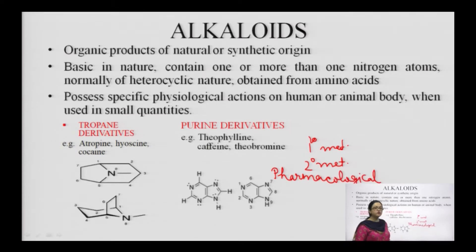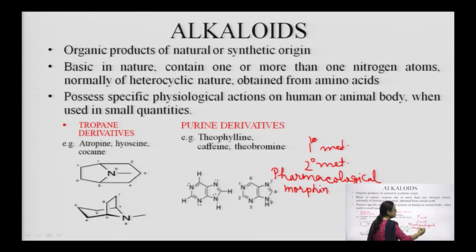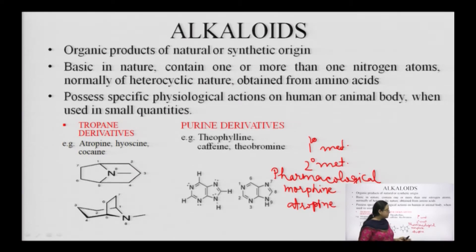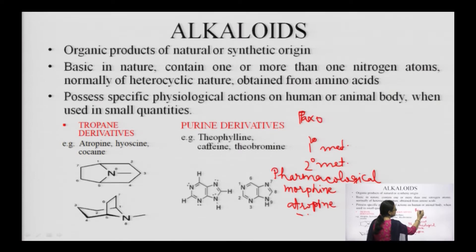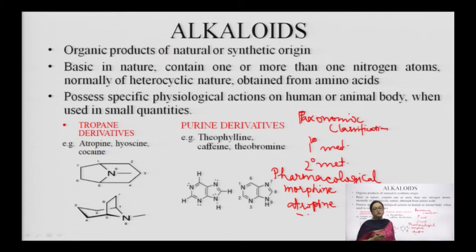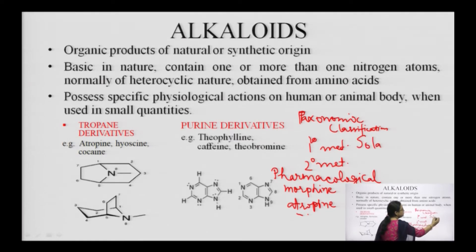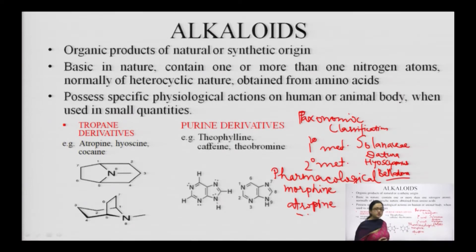For example, morphine is a very potent analgesic. Atropine is used as an antitussive agent and is an anticholinergic agent — very important. Based upon pharmacological activity, the next category is taxonomic classification. Taxonomic classification means we divide alkaloids on the basis of the family or genus they represent. Like the Solanaceae family — you have heard about Solanaceae — Datura, Hyoscyamus, Belladonna: these are the drugs which come under that group.